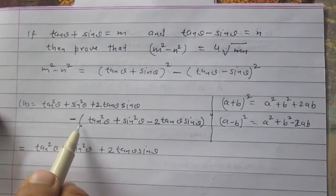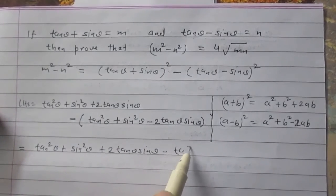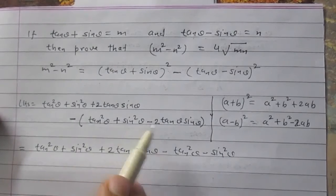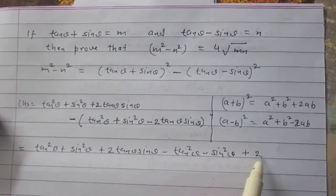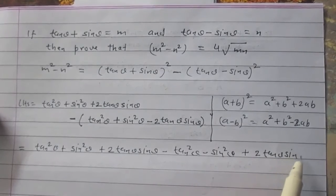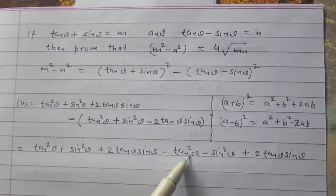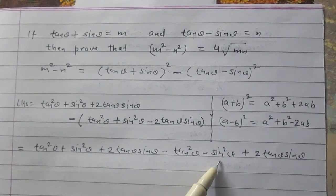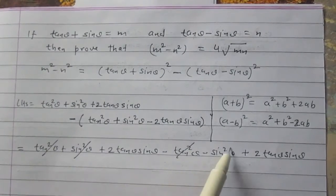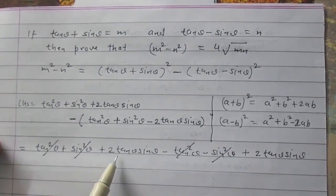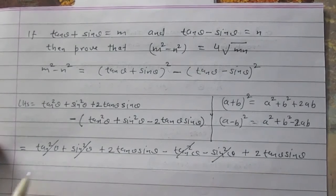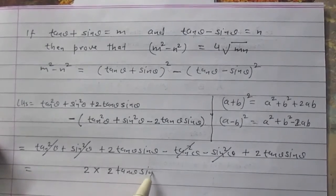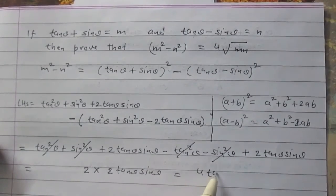After opening the bracket we get -tan²θ - sin²θ. Now tan²θ and -tan²θ cancel to zero, and sin²θ and -sin²θ also cancel to zero. The remaining terms are 2·tan θ·sin θ and again 2·tan θ·sin θ, so the left hand side equals 4·tan θ·sin θ.